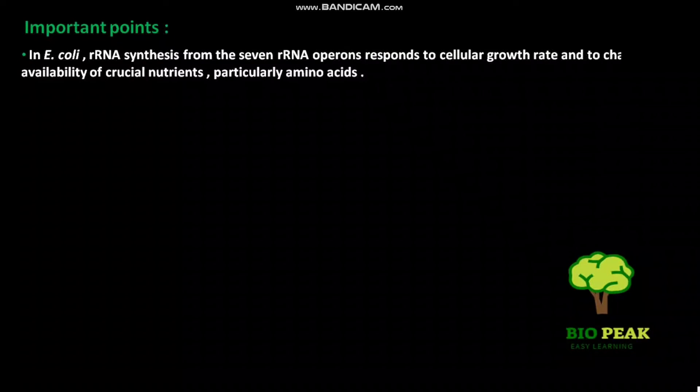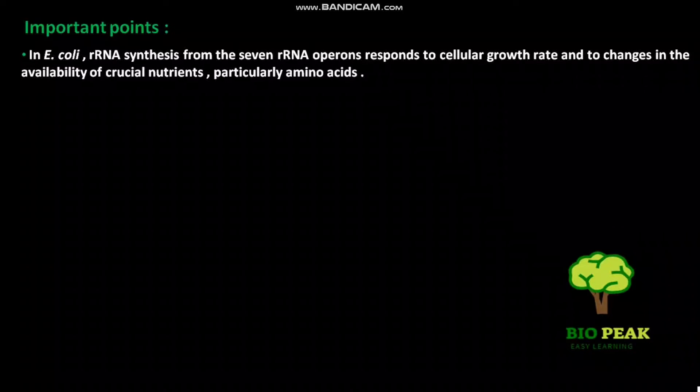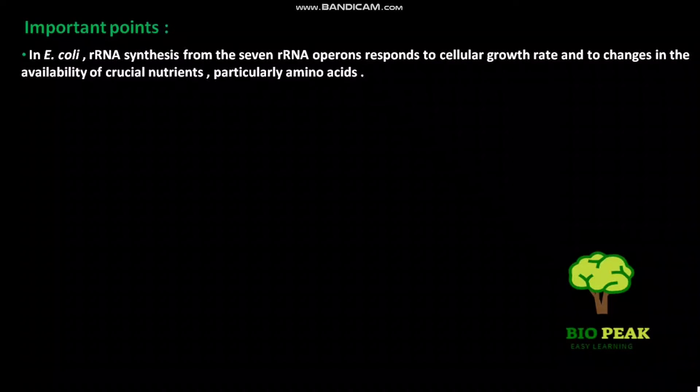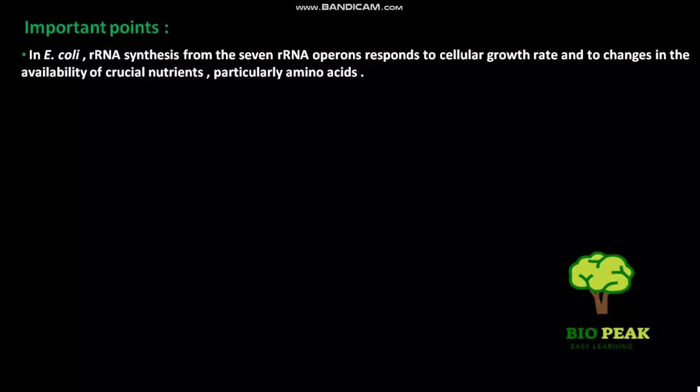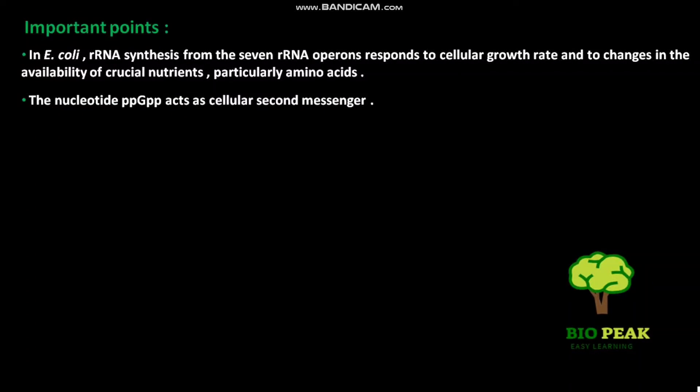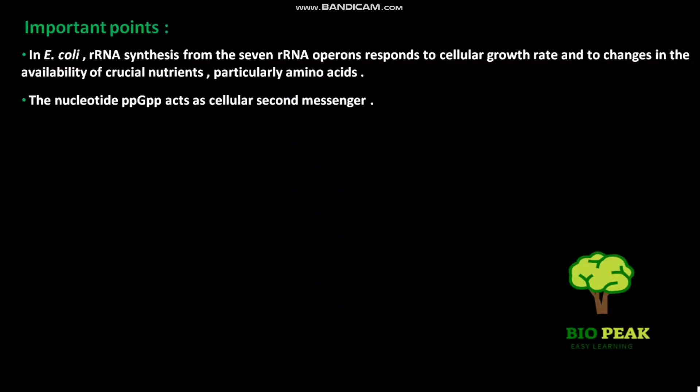Now some important points. In E. coli, rRNA synthesis from the seven rRNA operons responds to cellular growth rate and to changes in the availability of crucial nutrients, particularly amino acids. The nucleotide PPGPP acts as cellular second messenger.